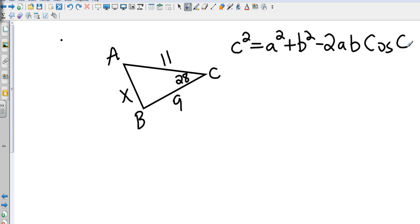We know that c is x, so that's going to be x². We know that a is 9. We know that b is 11. And we're going to take the cosine of 28 degrees.